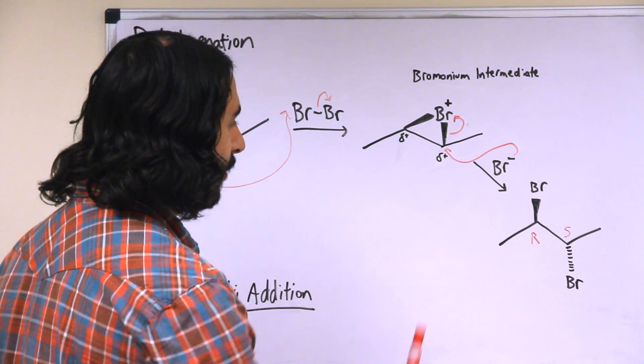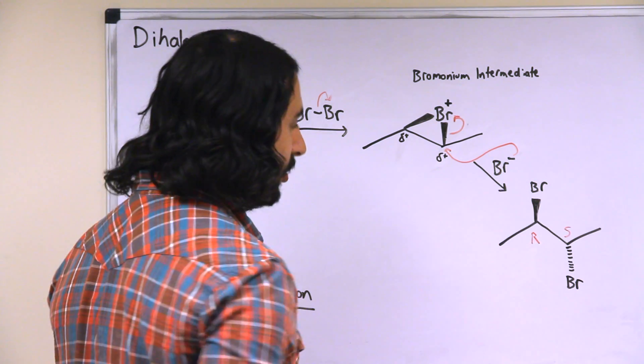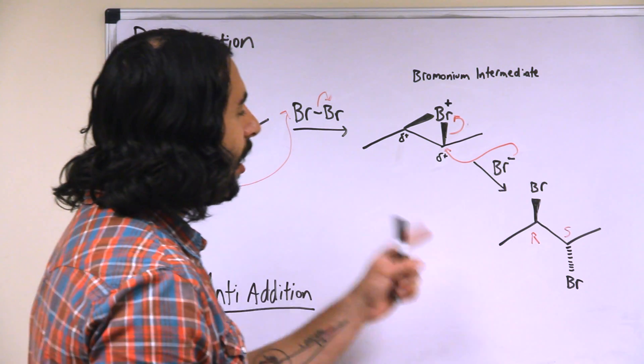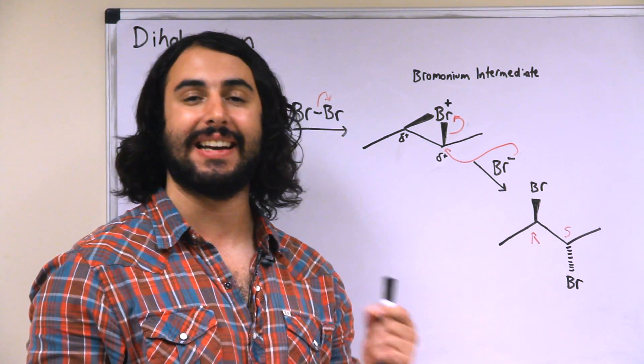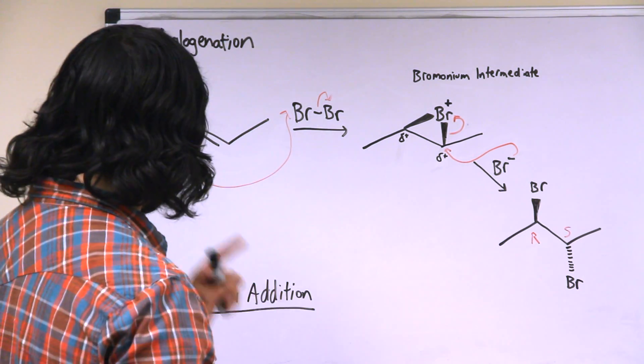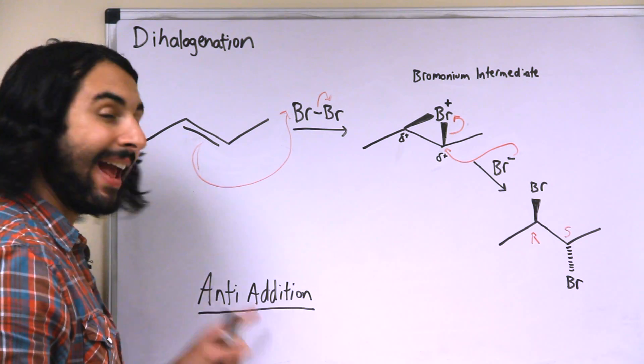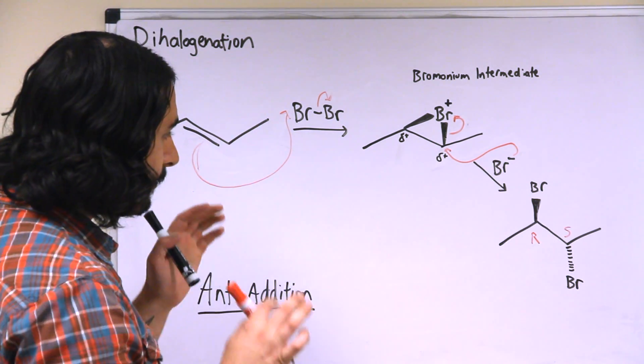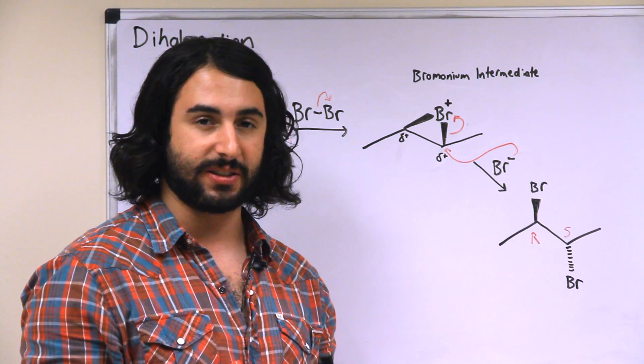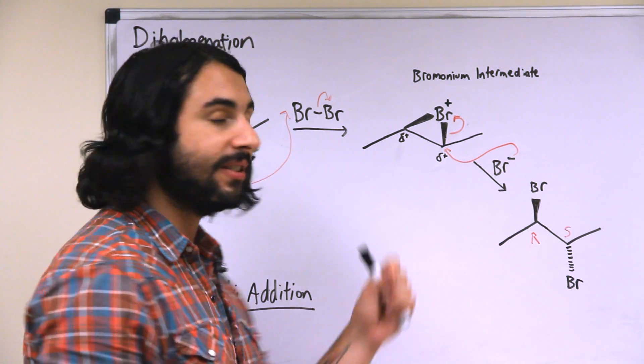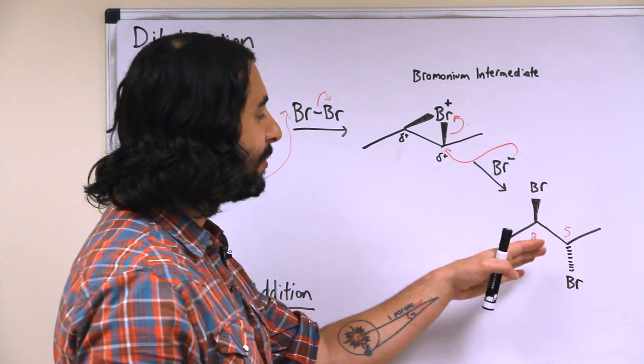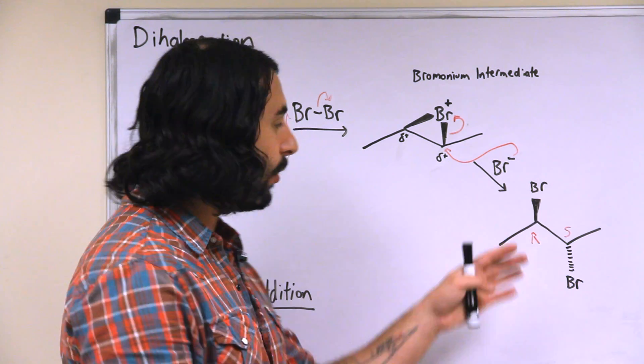The only difference is that the leaving group is going to remain tethered to the molecule because it has another bond to another carbon atom over there. Here's our dihalogenation product, so we have our two bromine atoms now on the product there. And because of the stereospecificity inherent in an SN2 reaction right here, being that it must proceed via the backside attack, that makes this an anti-addition reaction.